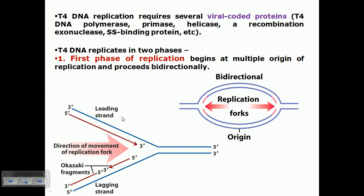For the packaging of the DNA, they need to produce the genome. T4 DNA replication requires several viral-coded proteins: T4 DNA polymerase, primase, helicase, recombination exonuclease, single-strand binding protein, and others. T4 DNA replicates in two phases — the first phase and the second phase of replication.